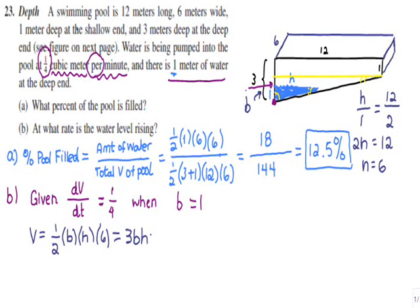Having both B and H as variables is a problem. Using the product rule on V = 3BH would produce both dB/dt and dH/dt. But dH/dt — the rate at which the horizontal distance across the water top changes — is unknown and not what we care about. So H is a 'bad variable' and we want to express H in terms of B using similar triangles.